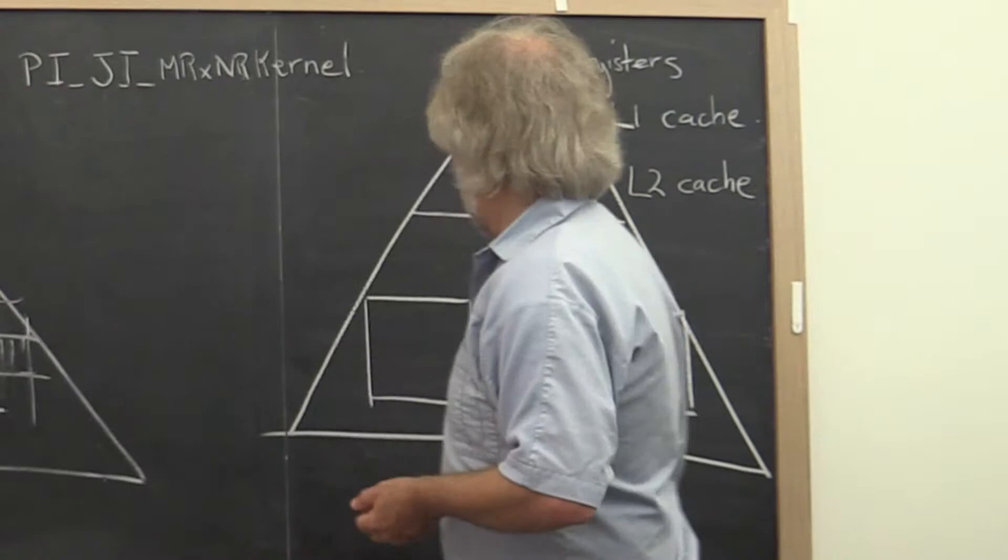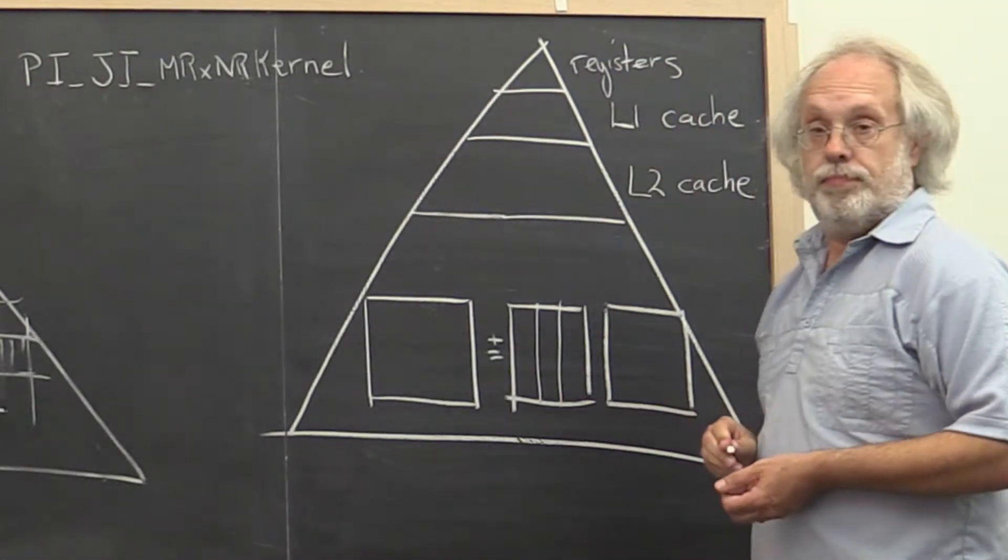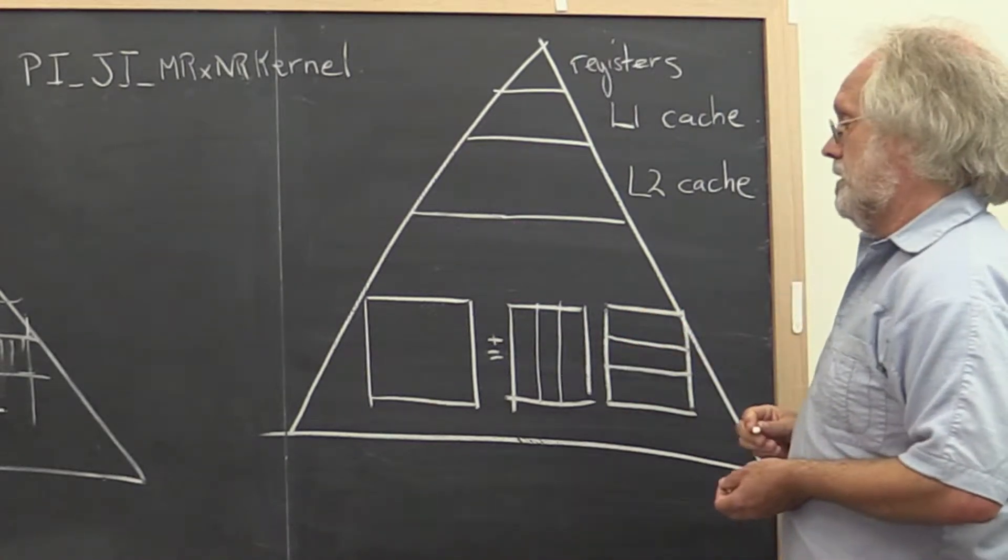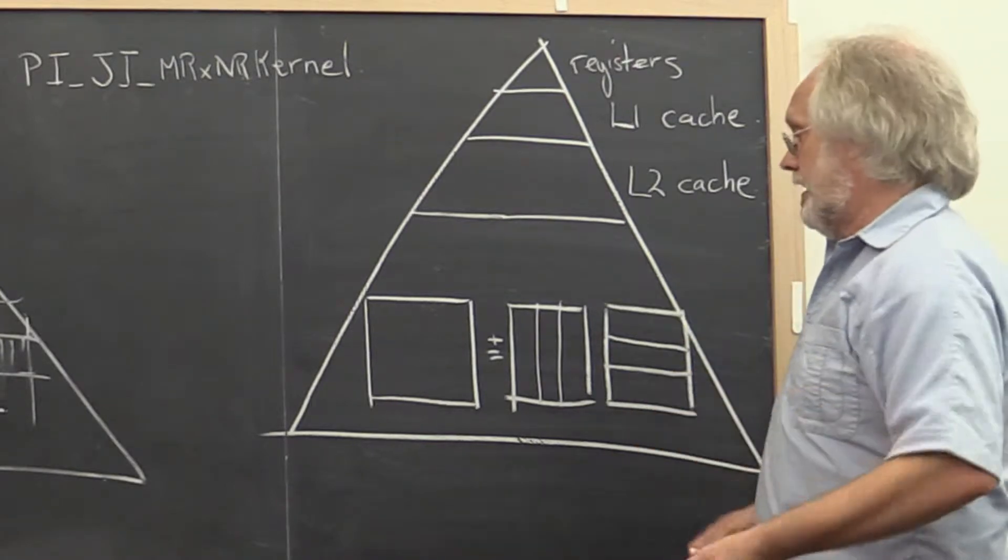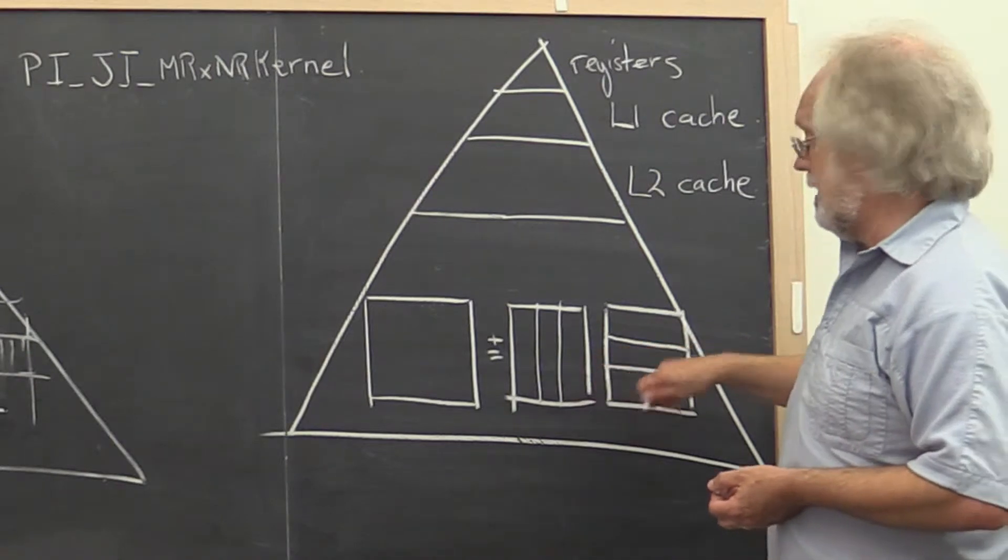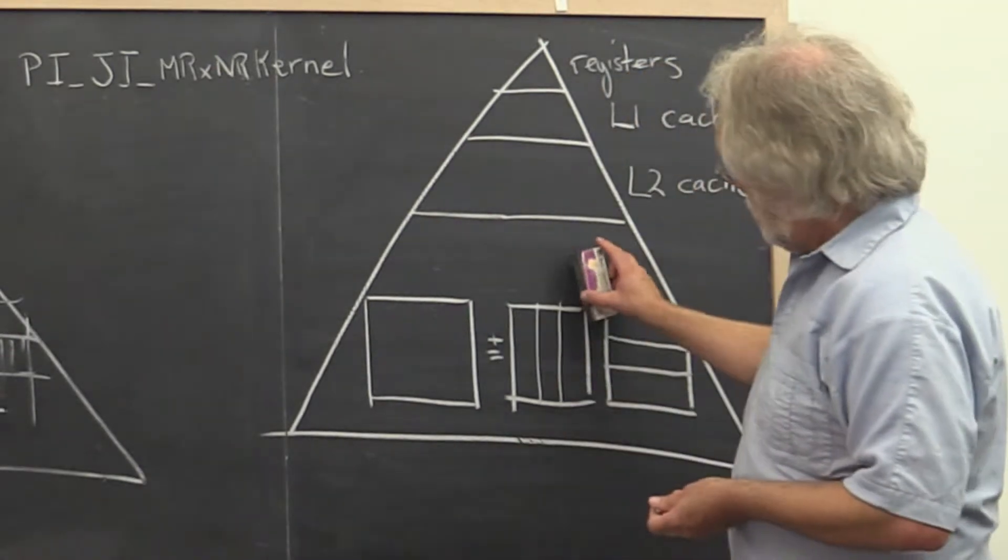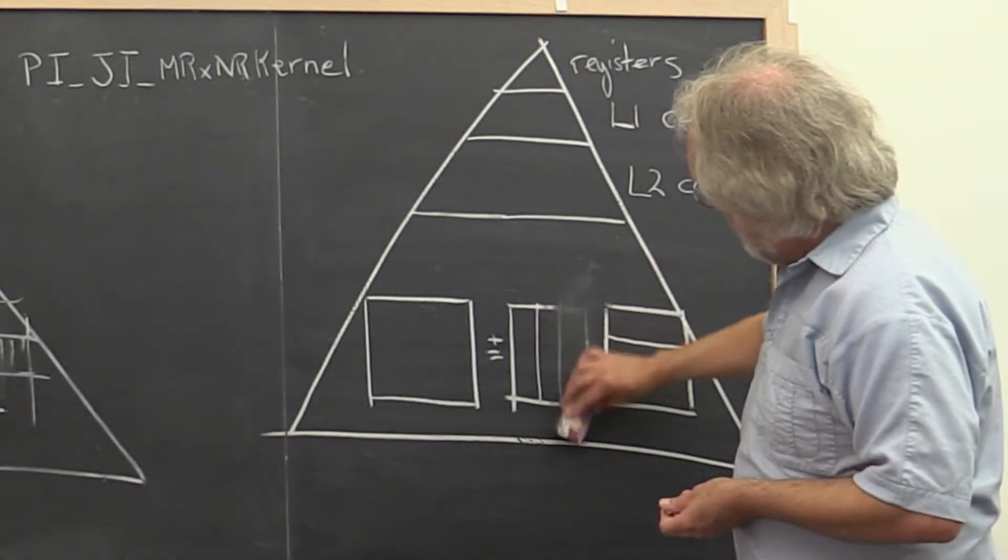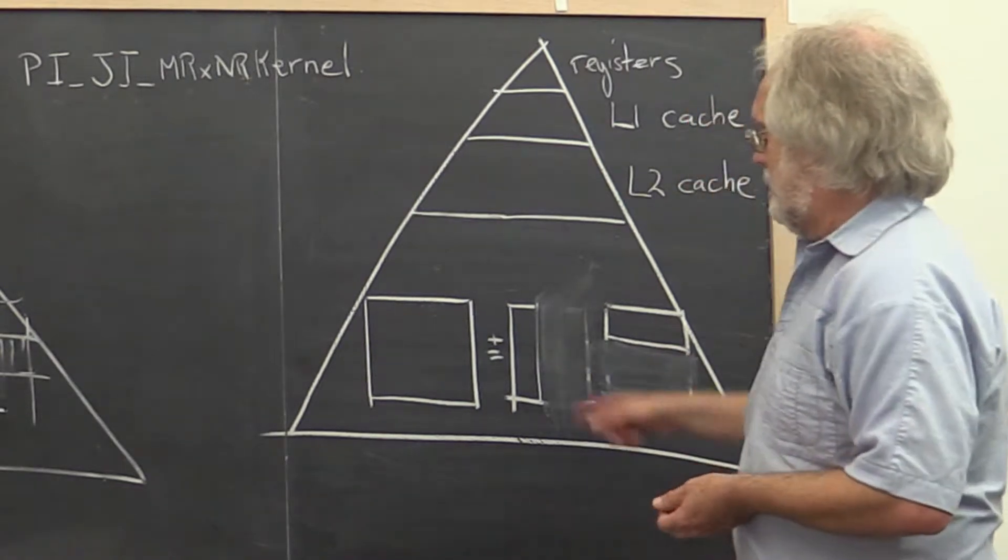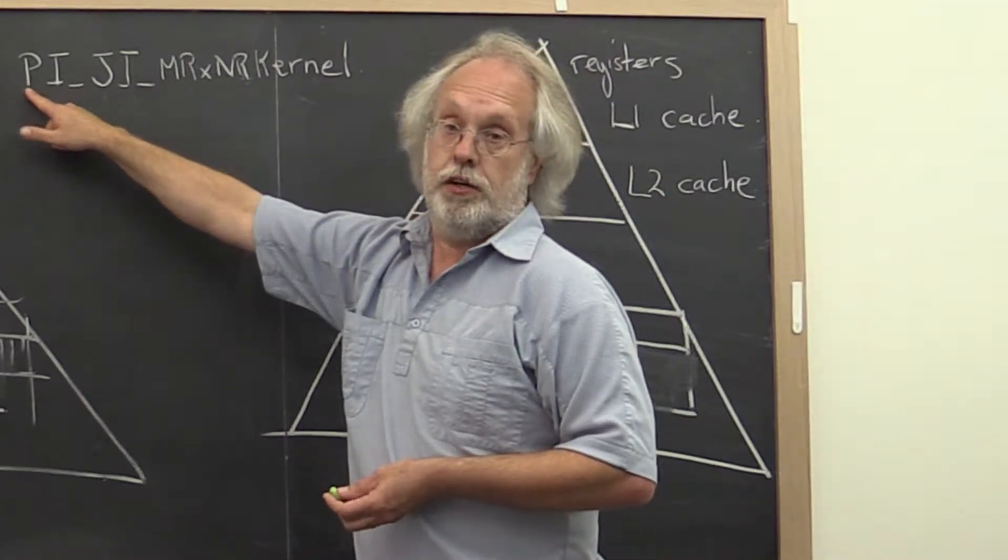The loop indexed by P means that we are partitioning A into column panels and B into row panels. And then inside of that loop, what we do is this times that plus this times that plus this times that. So let's focus on one of these. This is what happens in one iteration of the loop indexed by P.